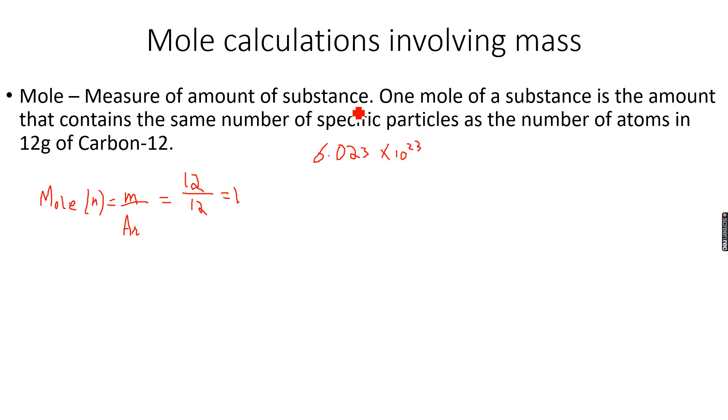So 12 grams of carbon-12 is one mole of carbon-12, and one mole of carbon-12 has 6.023 times 10 to the power of 23 atoms of carbon-12. So this is basically it.